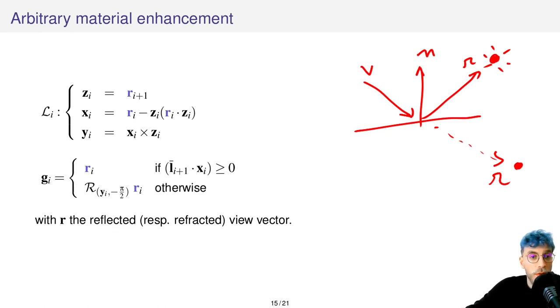So what we simply do is replacing n with r in both the definition of the local frame and the guiding vector. Doing so allows us to enhance highlights or refractions easily.